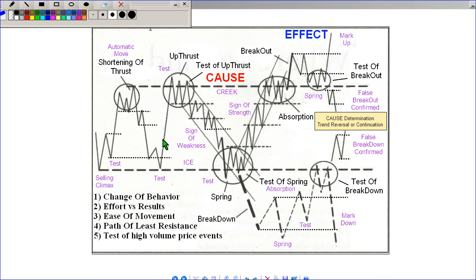All the descriptions on this pattern are well described on the website and in the previous patterns displayed. There's only one aspect that needs further classification or education, which is the yellow box called cause determination. This is where price has either broken out up or down but has fallen back into the range.